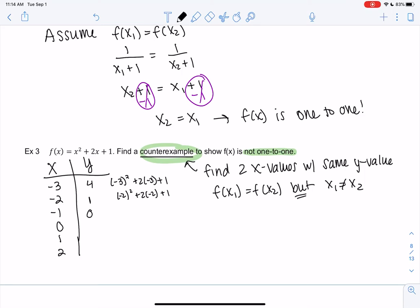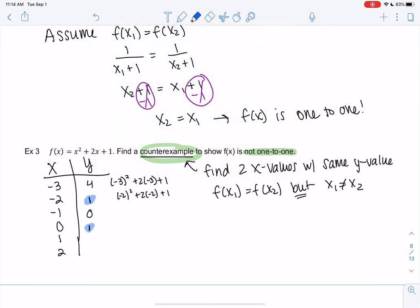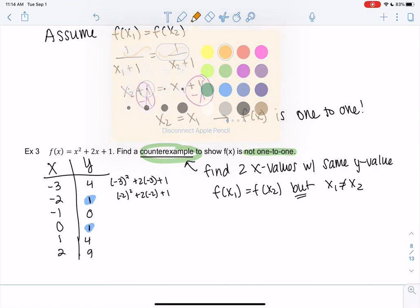Negative 1, I got 0. 0, I get 1. And it looks like I already found a counterexample, so I technically can stop. But I'm going to keep going because I want to show you that there's more than one counterexample. So there's lots of counterexamples. There's no one right answer. I think if I plug in 1, I get 1 plus 2 plus 1, I get 4. And then if you go to 2, I got 9. So the 4s are also counterexamples.